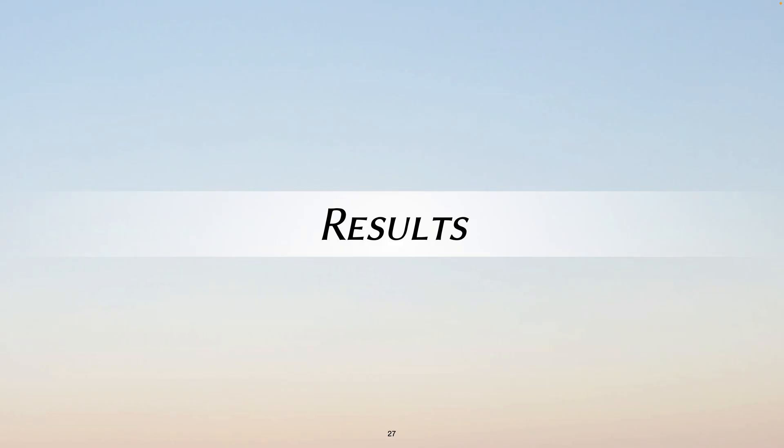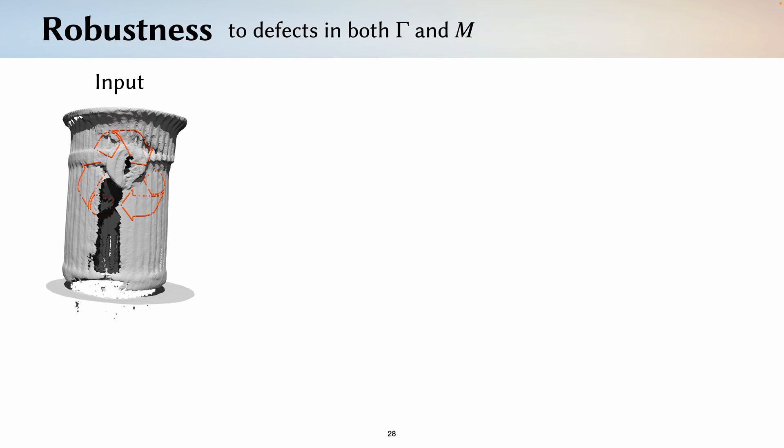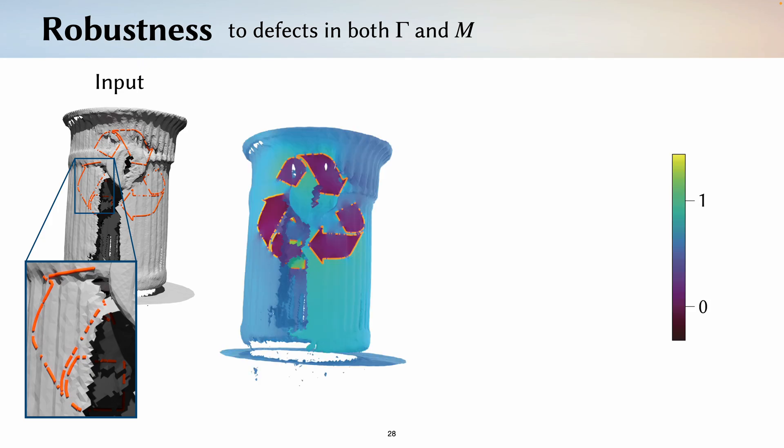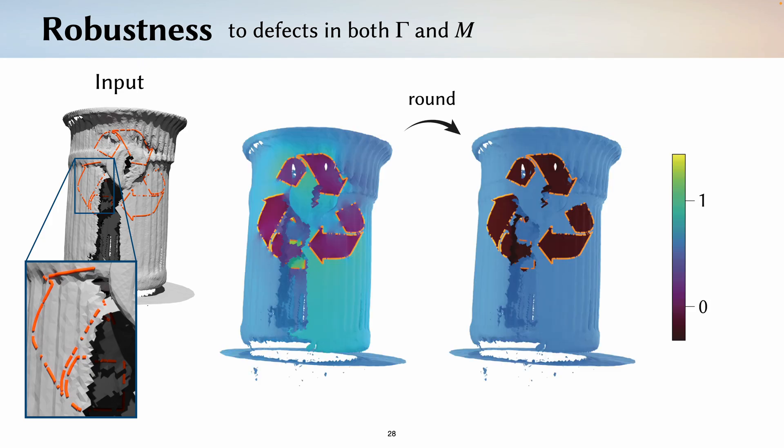Now let's see some results. In general, we find that our method is very robust to both defects in the curve and the underlying surface. For example, here's a really bad scan of a trash can that has all sorts of holes and on it is a curve with a lot of missing pieces. But our method is still able to produce a good region labeling.